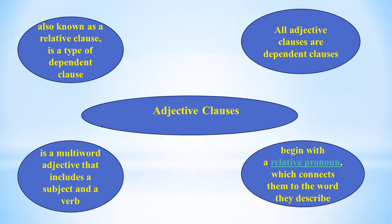Each adjective clause above also contains a subject and a verb, all of which work together to describe the original noun being modified. For example, the clause 'which many people adore' contains the subject 'people' and the verb 'adore,' yet by itself it is not a complete sentence. Instead, its job is to provide more information to describe the noun 'chocolate.'